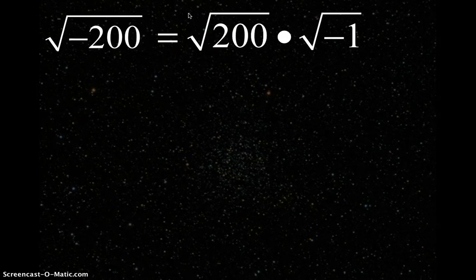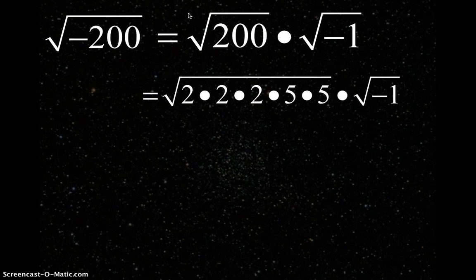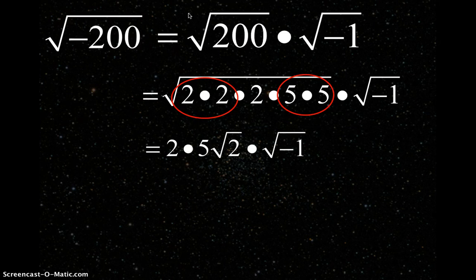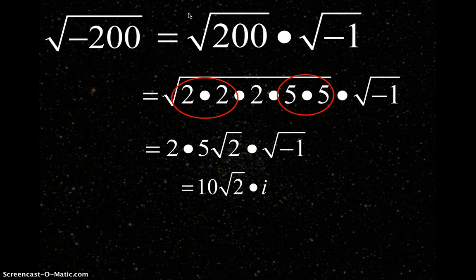Square root of negative 200 — same idea. Break out the negative 1. Take prime factors of 200; use a factor tree if needed. 2 times 2 times 2 times 5 times 5 makes 200. We have a pair of 2s and a pair of 5s, so we write 2 and 5 outside the radical to denote those pairs, leaving the remaining 2 inside. This simplifies to 10 root 2 times the square root of negative 1, which is i, giving us 10i root 2.